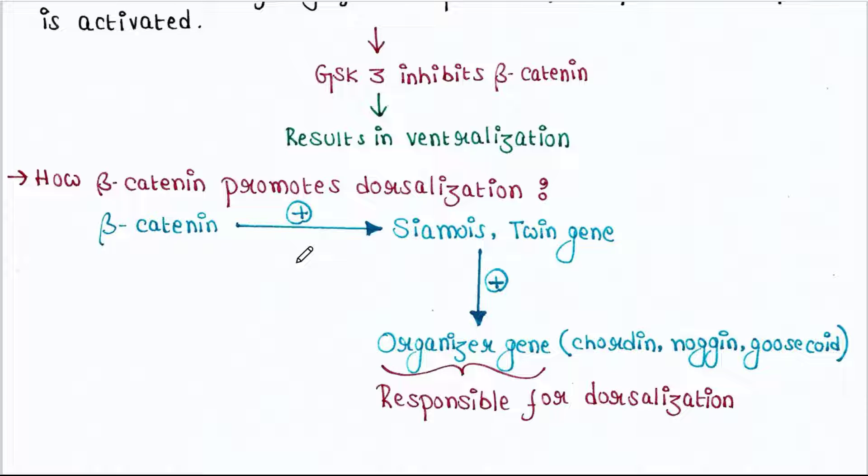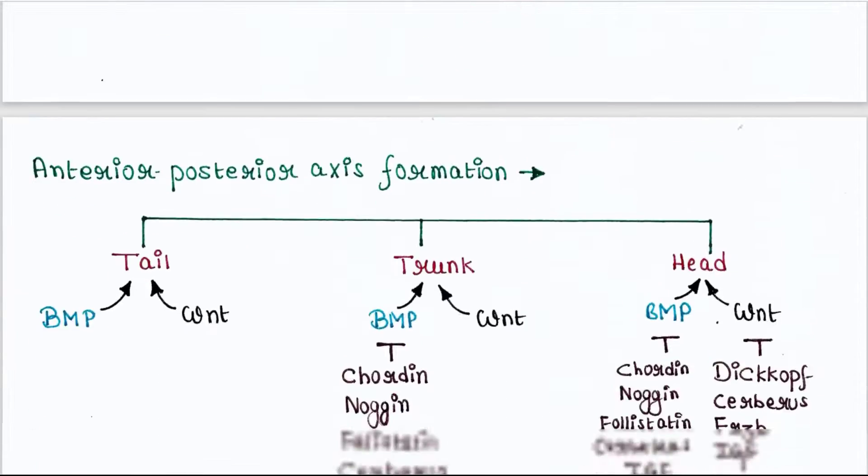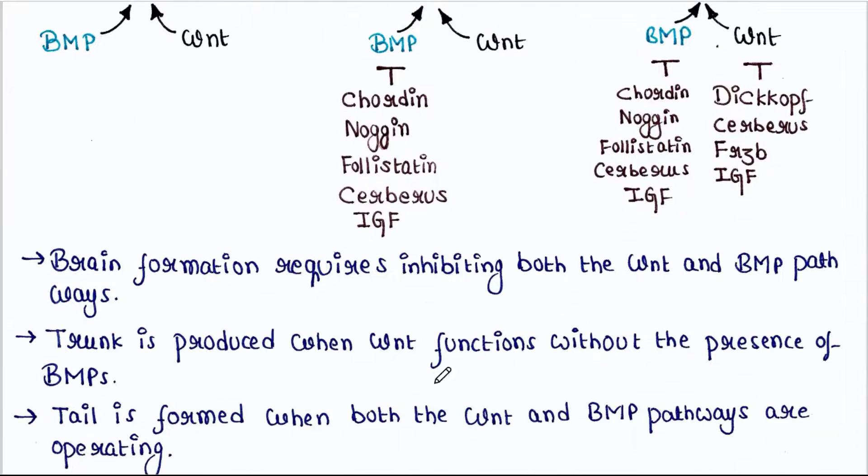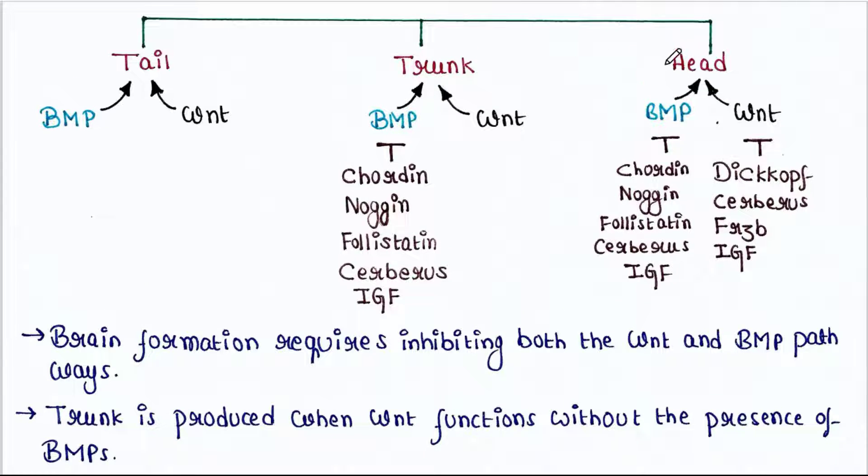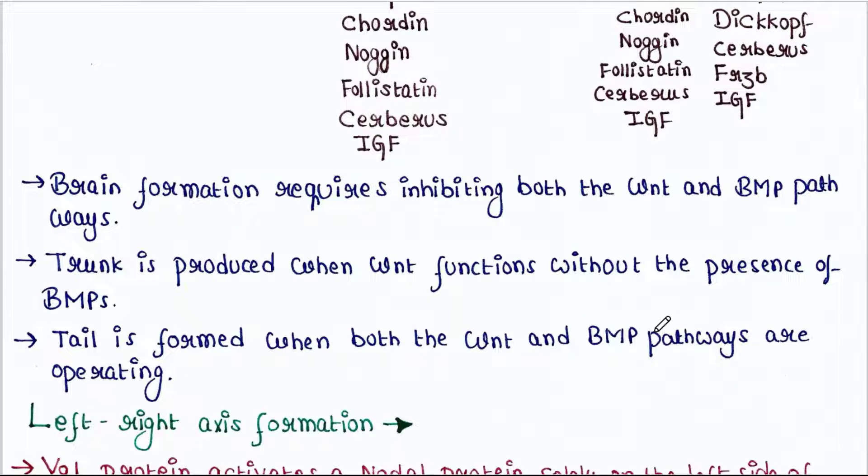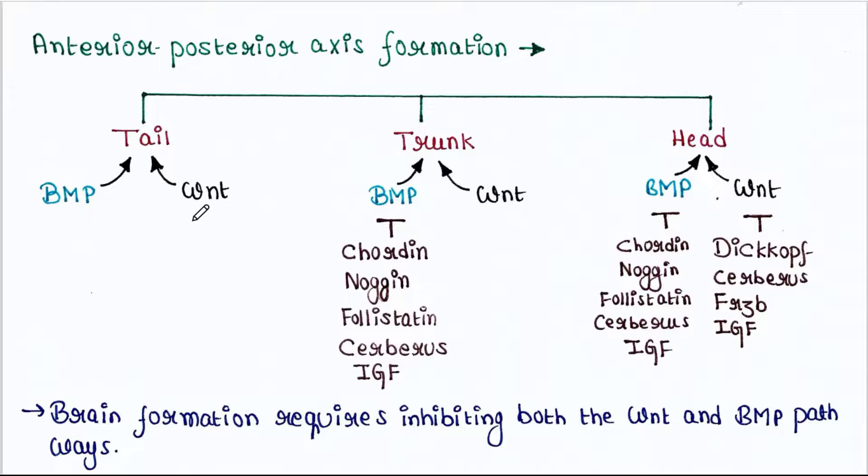Anterior-posterior axis formation. Brain formation requires inhibiting both the Wnt and BMP pathways. Trunk is produced when Wnt functions without the presence of BMPs. Tail is formed when both the Wnt and BMP pathways are operating. There are proteins which inhibit BMP pathway and proteins which inhibit Wnt pathway.